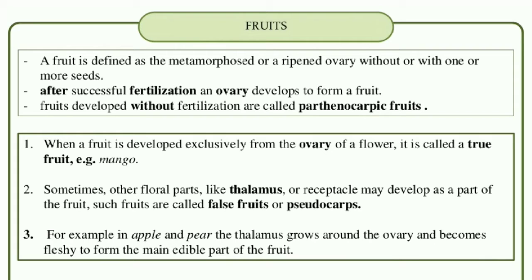For example, in apple and pear, the thalamus grows around the ovary and becomes fleshy to form the main edible part of the fruit. In apple, whatever part we eat is the thalamus — the edible part is thalamus. Whatever we throw out after eating is the actual fruit. Such fruits are called false fruits or pseudocarp.